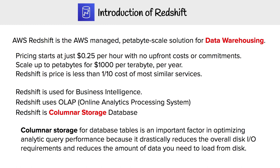Now that we know what a data warehouse is, let's talk about the reasons why you'd want to use Redshift. Redshift pricing starts at 25 cents per hour with no upfront costs or commitments. It scales up to petabytes of data for $1,000 per terabyte per year. Redshift is priced at less than one-tenth the cost of most similar services. Redshift is used for business intelligence, uses OLAP, and is a columnar store database.